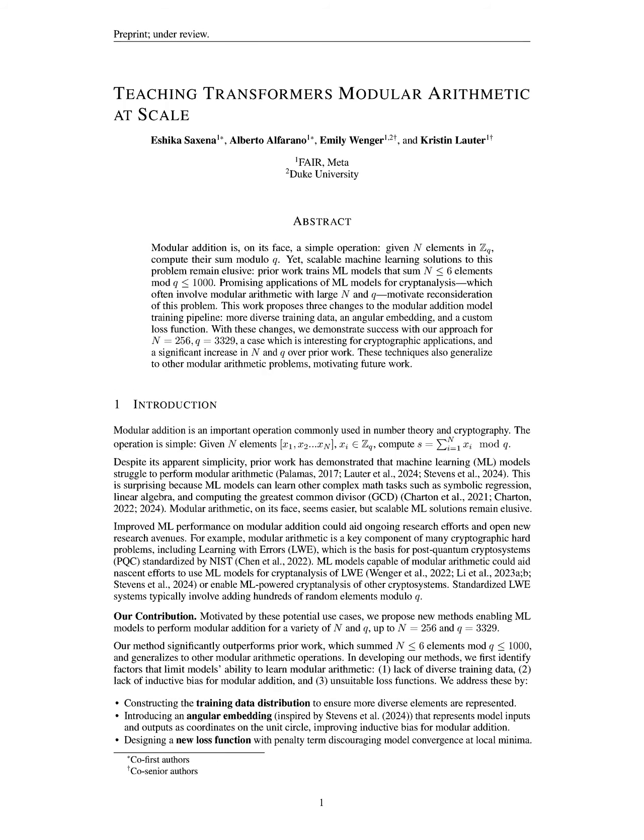If the sum s is, for example, 2100, the model will output 2100 mod 257 = 2100 - 8×257 = 2100 - 2056 = 44.